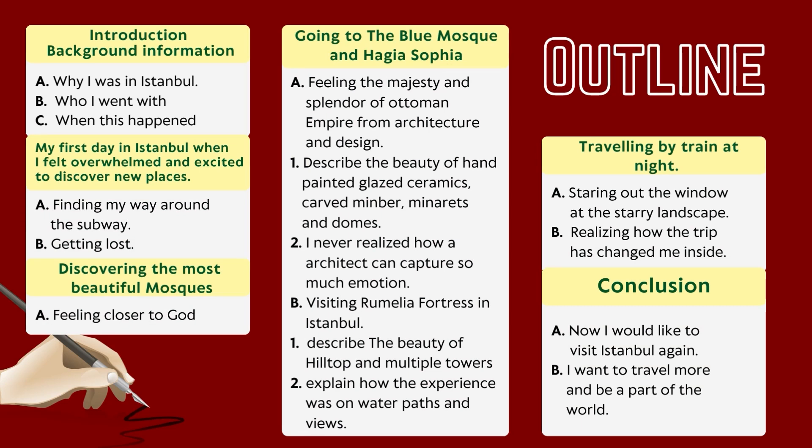The outline has these paragraphs: Introduction with background information — why I was in Istanbul, who I went with, and when it happened. Next paragraphs cover my first day in Istanbul when I felt overwhelmed and excited to discover new places, discovering the most beautiful mosques, travelling by train at night, and finally the conclusion and ending.